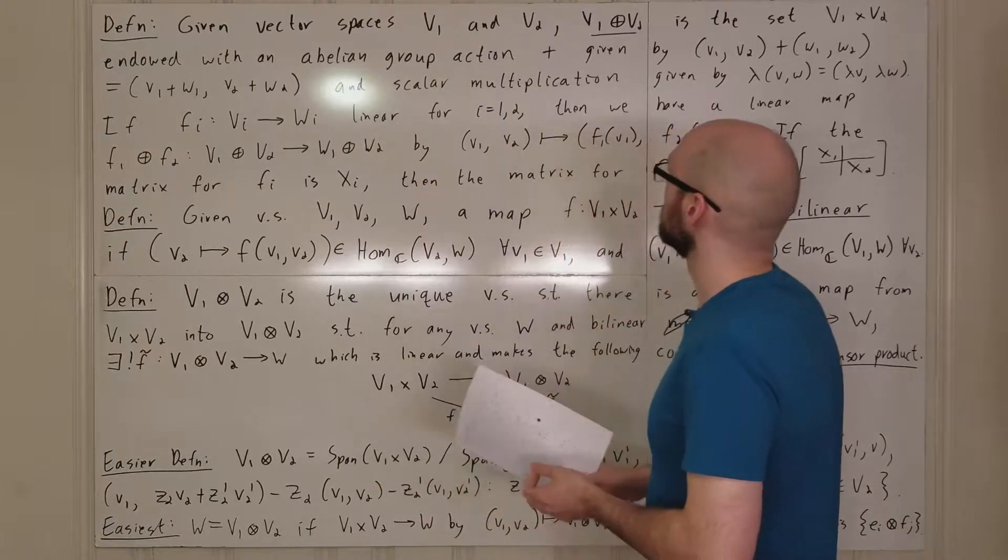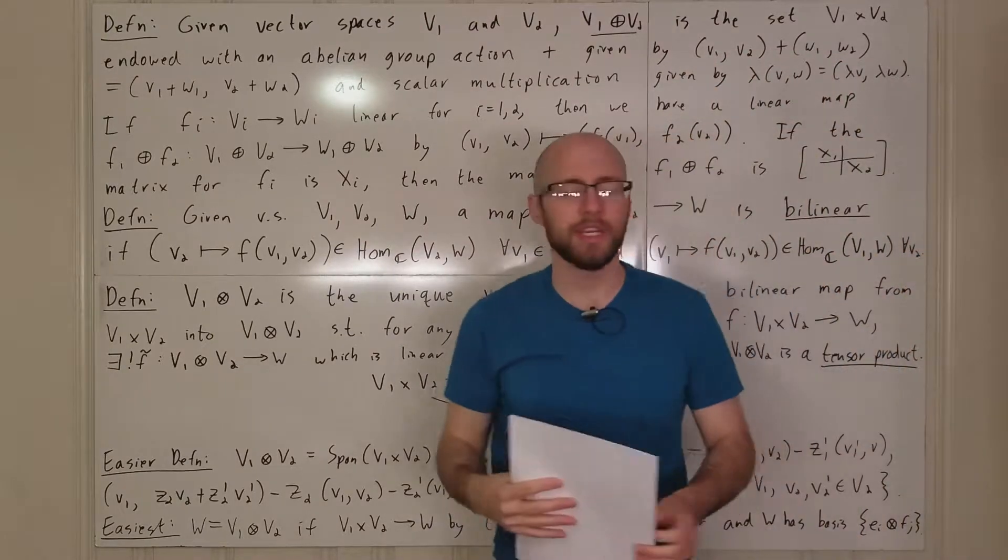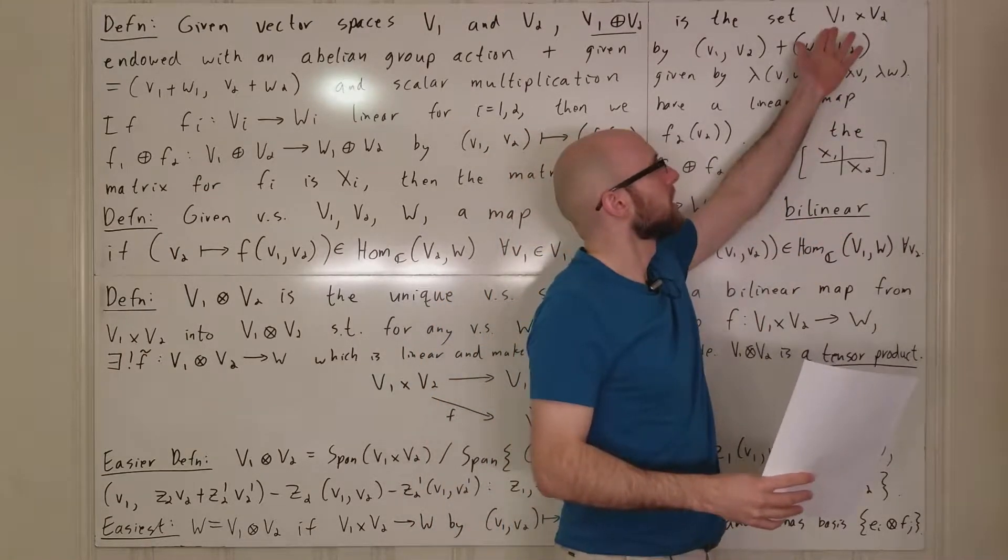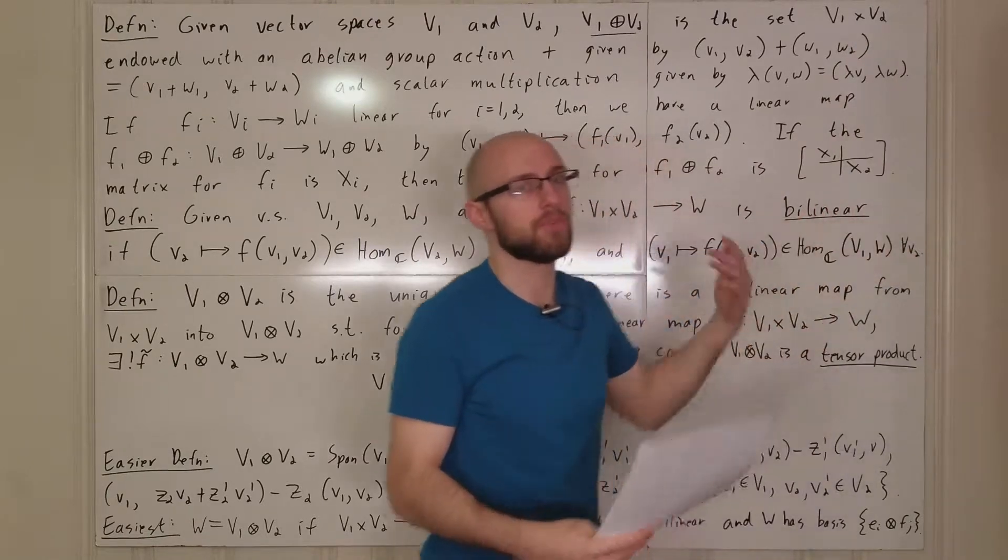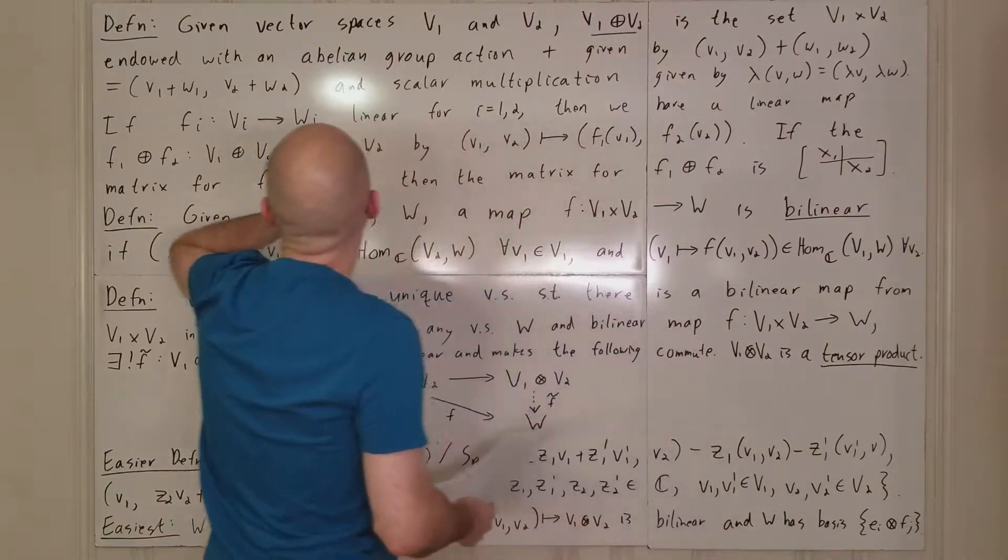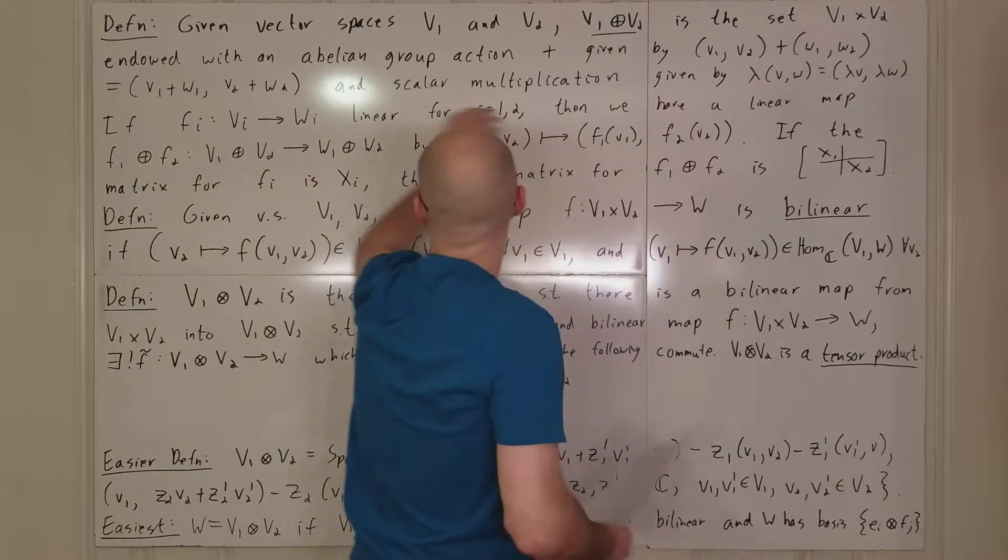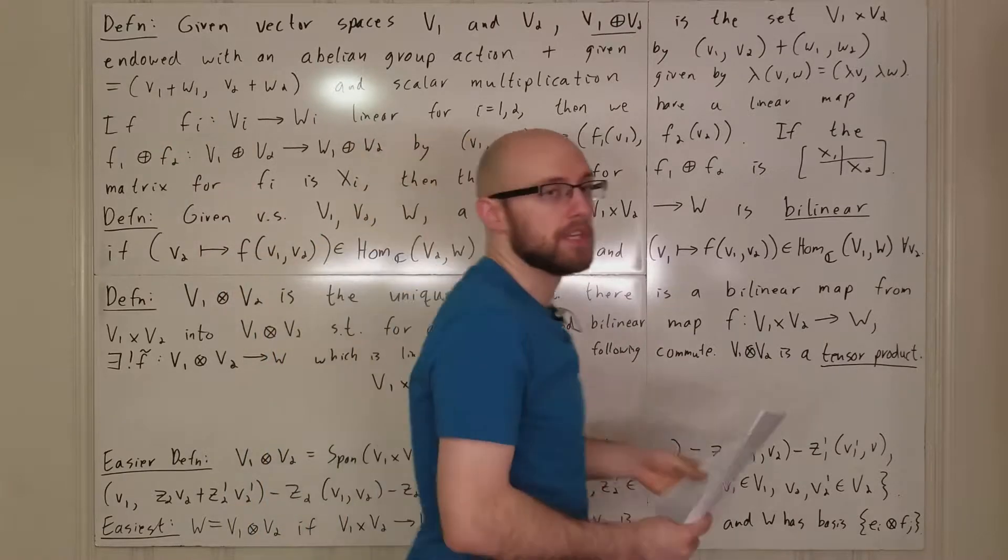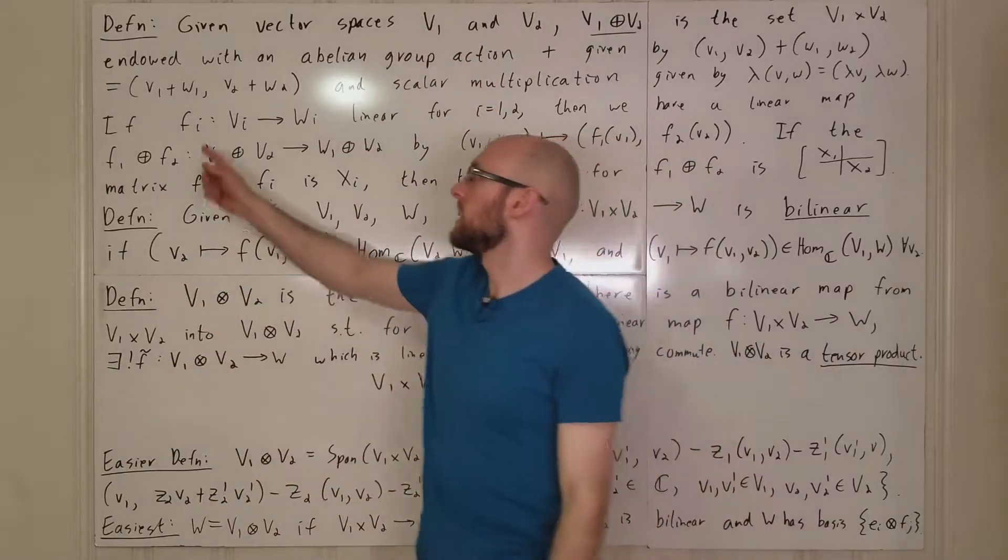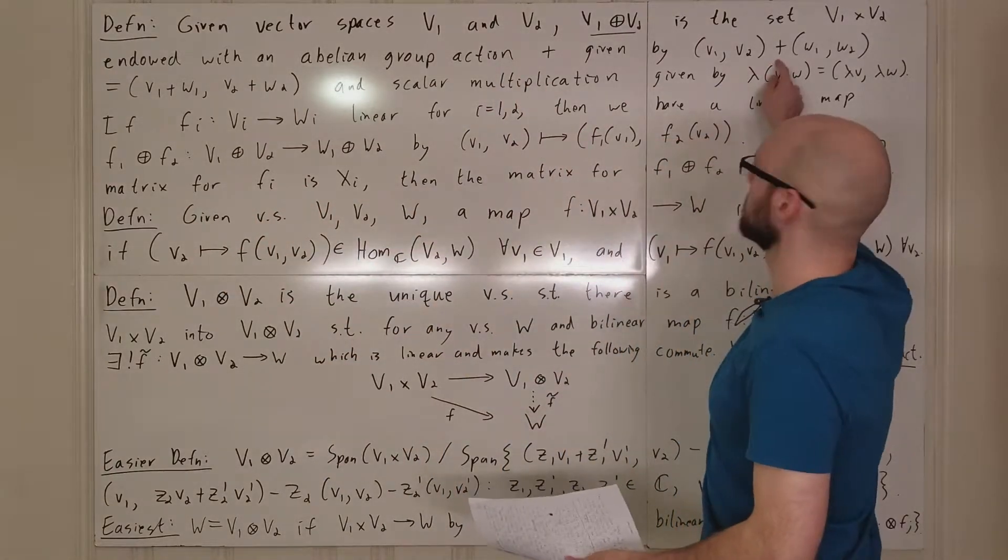So if you have two vector spaces, V1 and V2, then we can take their direct sum. How we get this is we start with the setwise direct product, V1 cross V2, so we just have ordered pairs where the first coordinate is in V1 and the second coordinate is in V2. And we end up with an abelian group action plus, where if you add two vectors, you just add each of the coordinates. And of course, the reason this is abelian is because V1 and V2 are vector spaces.